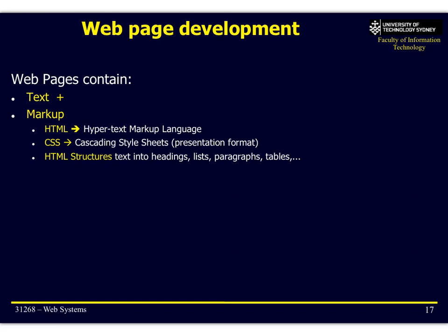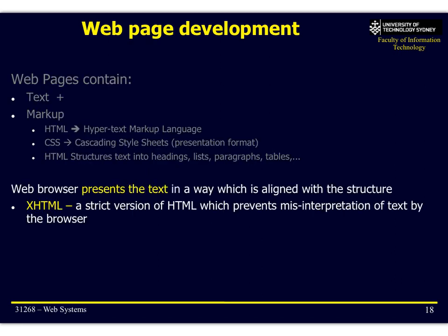Web pages are generally just plain text files. They contain text — the content — as well as markup. The different types of markup include HTML, which describes how the content is displayed, and CSS, the Cascading Style Sheet, which shows how you actually present the page. HTML is divided into various structures such as headings, lists, paragraphs, tables, images, forms, and so on. The web browser interprets this text, markup, and CSS, and presents it in a visually appealing way.